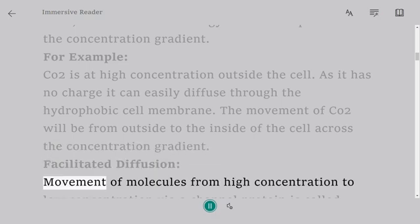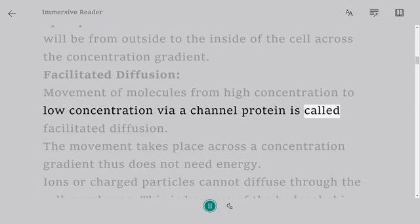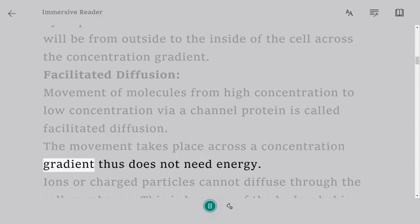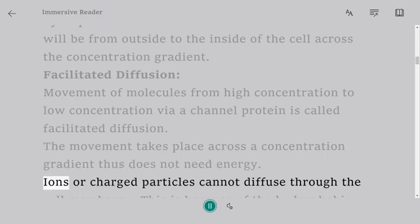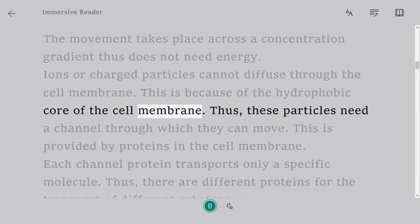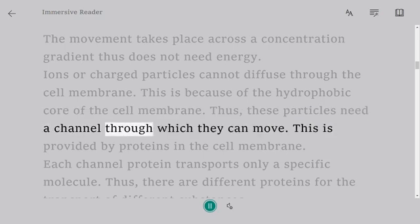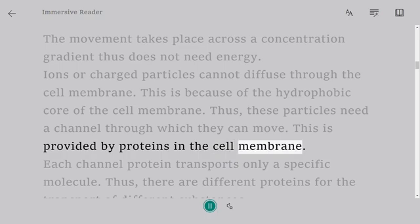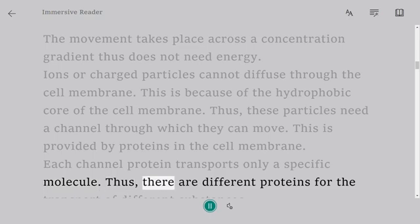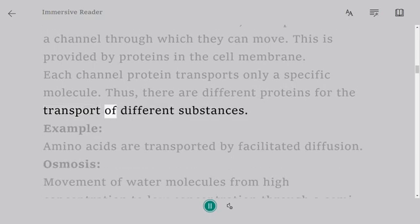Facilitated diffusion: Movement of molecules from high concentration to low concentration via a channel protein is called facilitated diffusion. The movement takes place across a concentration gradient thus does not need energy. Ions or charged particles cannot diffuse through the cell membrane. This is because of the hydrophobic core of the cell membrane. Thus, these particles need a channel through which they can move. This is provided by proteins in the cell membrane. Each channel protein transports only a specific molecule. Thus, there are different proteins for the transport of different substances.